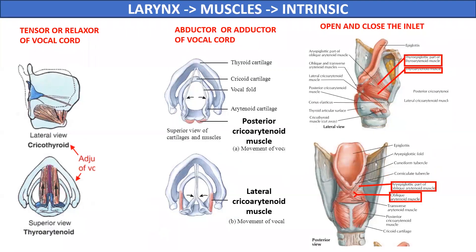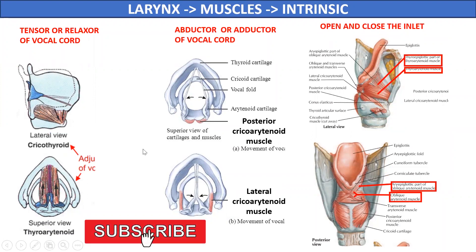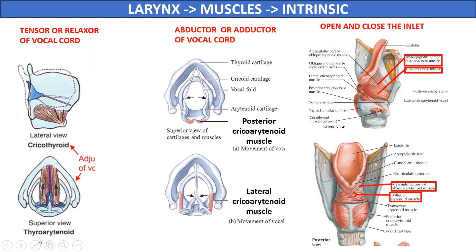The second group of muscles are those required for movement of the vocal cords during phonation and respiration. These intrinsic muscles are broadly divided into three groups according to their movements. The first group can either cause tension or relaxation of the vocal cords — these are the cricothyroid and thyroarytenoid muscles. The second group causes abduction (posterior cricoarytenoid) or adduction (lateral cricoarytenoid) of the vocal cord. These intrinsic muscles can also cause opening or closure of the laryngeal inlet — the opener is the thyroepiglotticus muscle, while closure is by the aryepiglottic and oblique arytenoid muscles.